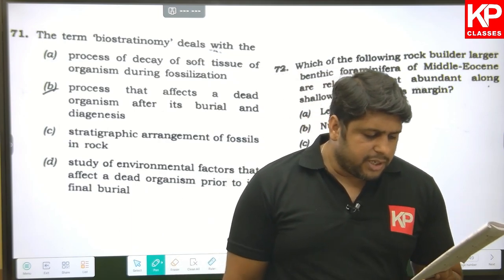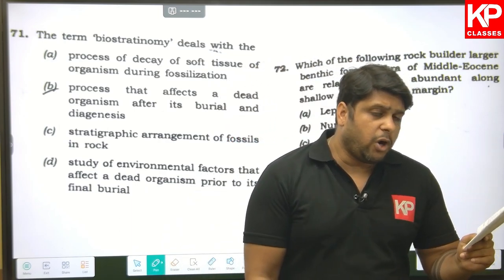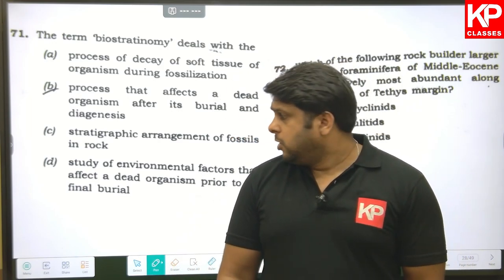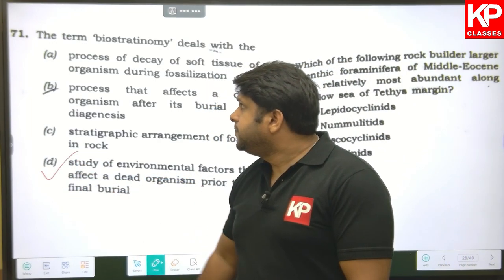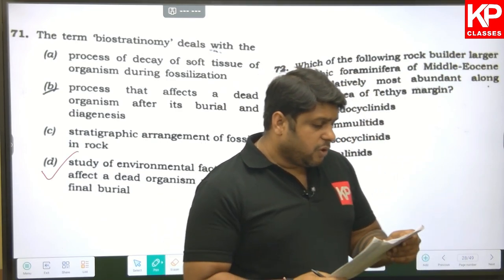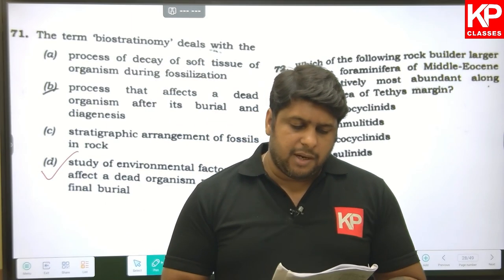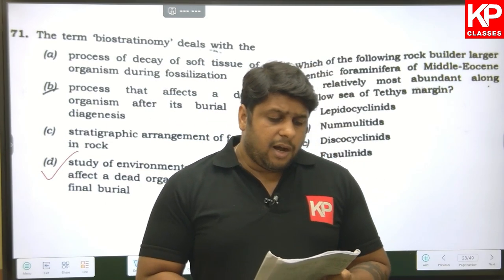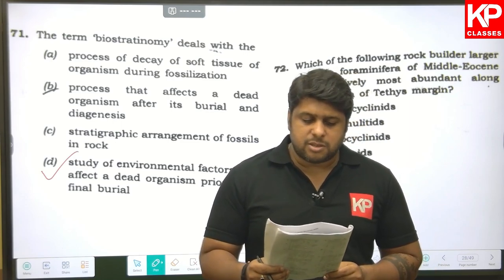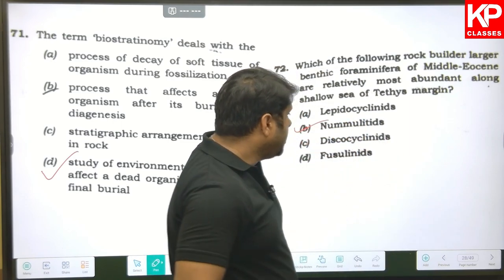Question seventy-one: the term biostratinomy deals with which process? Options include decay of soft tissue, post-burial changes, taxonomy inconsistency, and the study of environmental factors affecting a dead organism prior to its final burial. The last option — study of environmental factors before final burial — is correct, so D is the right answer. Question seventy-two: which rock-building larger benthic foraminifera of the middle Eocene are relatively most abundant along the shallow seas of the Tethys margin? The answer is Nummulites.